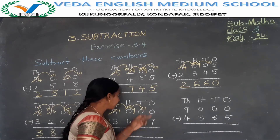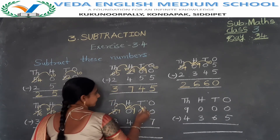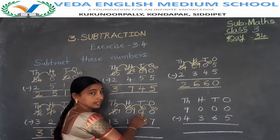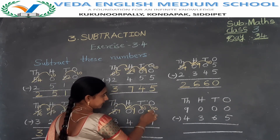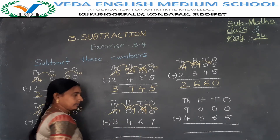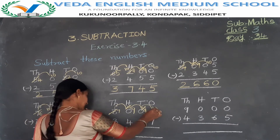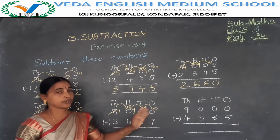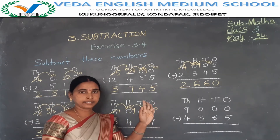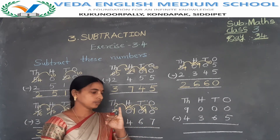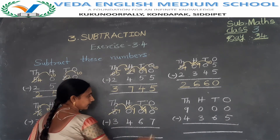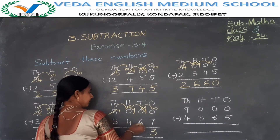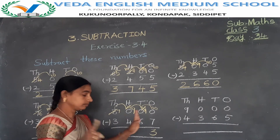Now take a borrow from the tens place to the ones place: 10 tens, but 1 ten has gone to the ones place, so 10 becoming 9. Now do the subtraction: 10 minus 7. Backward counting: 9, 8, 7, 6, 5, 4, 3 — so 10 minus 7 is 3. Next: 9 minus 6. Backward counting: 8, 7, 6, 5, 4, 3 — equals 3.